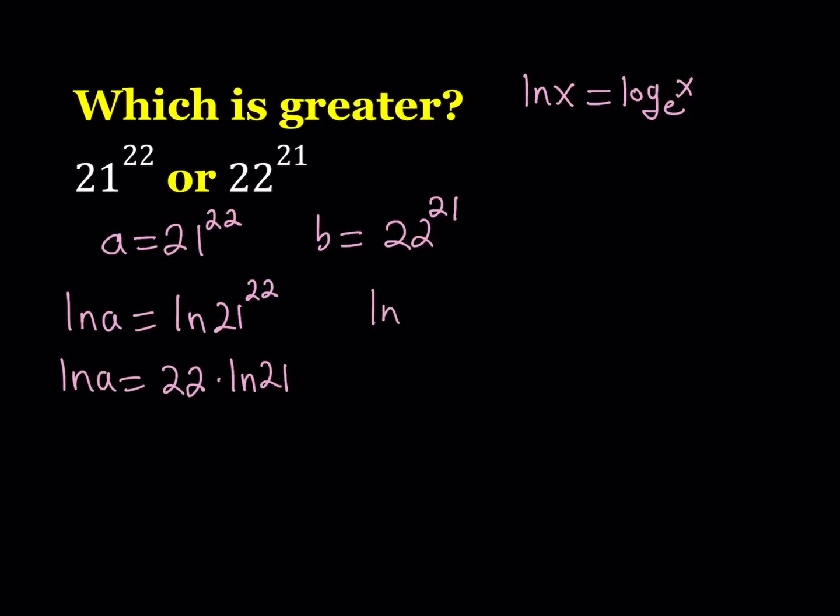We do the same thing here. ln B is equal to ln 22 to the power 21. And we get ln B is equal to 21 times ln 22. Great.